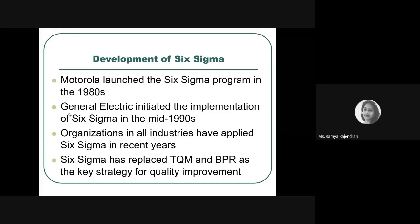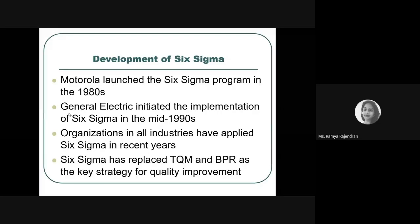Six Sigma came into being in the 1980s in a Motorola factory. Quality is an important discriminating factor across industries, and several strategies have evolved to improve quality. Six Sigma was introduced by William Smith, an employee of Motorola in the 1980s, to reduce manufacturing defects. Motorola was one of the first companies to adopt it, and General Electric adopted Six Sigma methodologies in the mid-1990s.